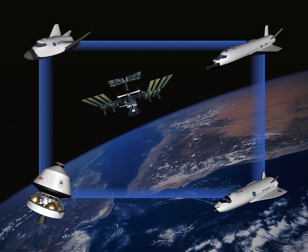The Orbital Space Plane program was a NASA spaceplane concept in the early 2000s designed to support the International Space Station requirements for crew rescue, crew transport, and contingency cargo such as supplies, food, and other needed equipment. With the initiation of the Constellation program in 2004, NASA transferred the knowledge gained on the OSP to the development of the Crew Exploration Vehicle, an Apollo-style capsule with separate crew and service modules.